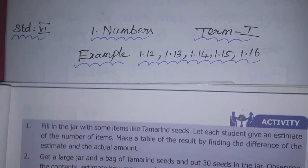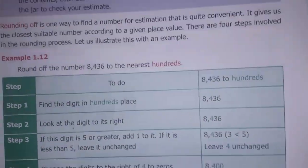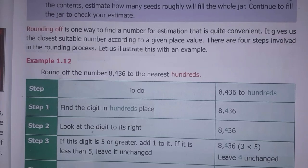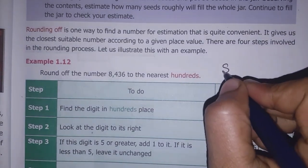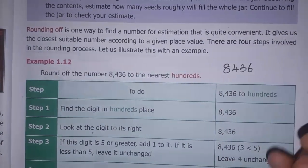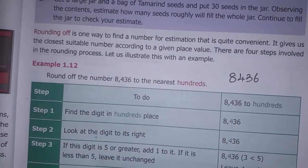The first example is 1.12. Round off the number 8,436 to the nearest hundreds. That is 8,436 to the nearest hundreds.